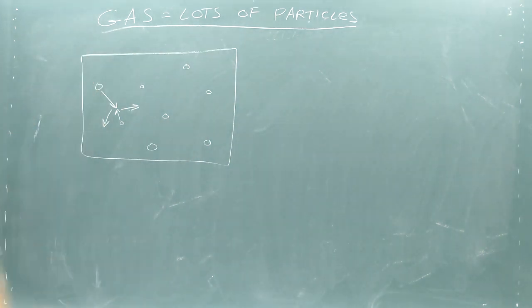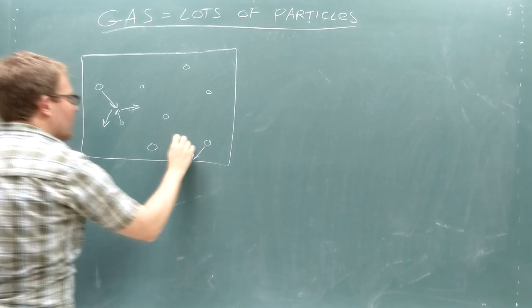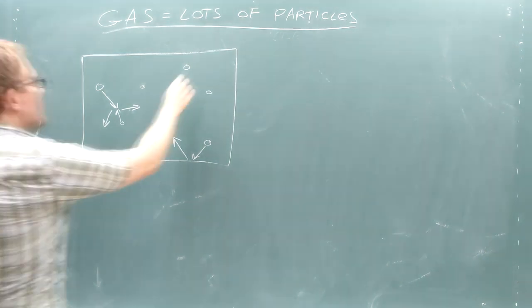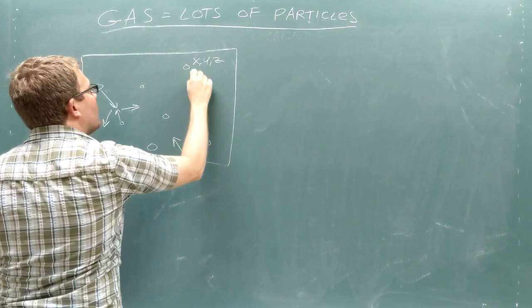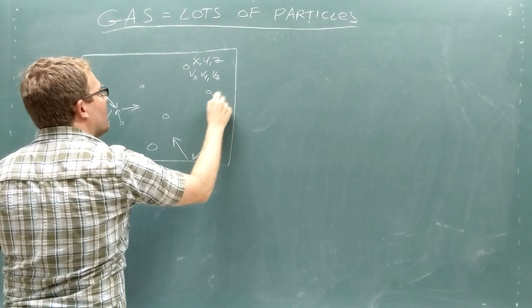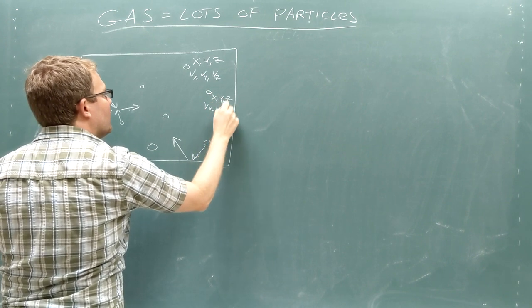They also bounce off the walls of their container, but otherwise they travel in a straight line. Since each particle in the gas has its own position and velocity, it is not reasonable to keep track of each particle individually.